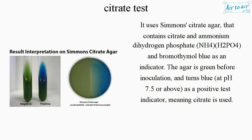It uses Simmons' citrate agar, that contains citrate and ammonium dihydrogen phosphate (NH4H2PO4), and bromothymol blue as an indicator.